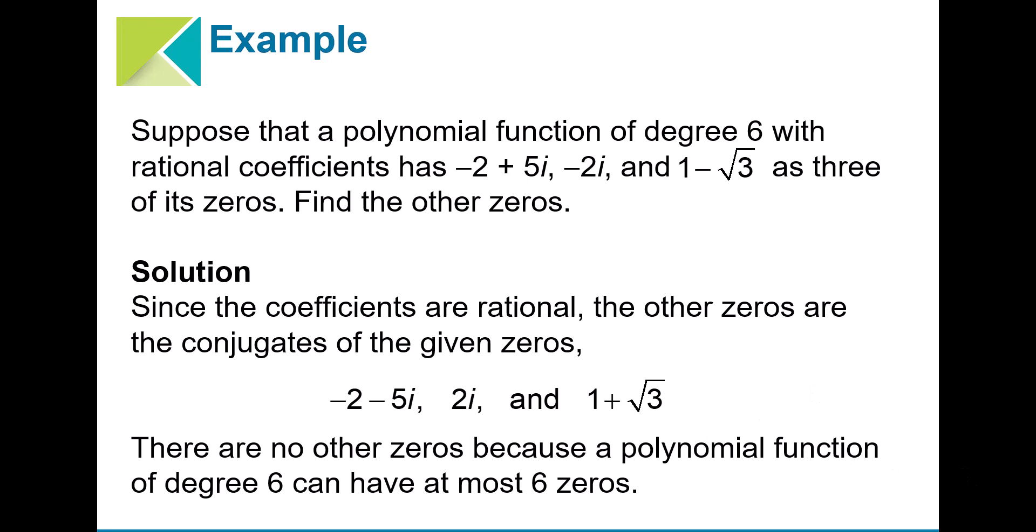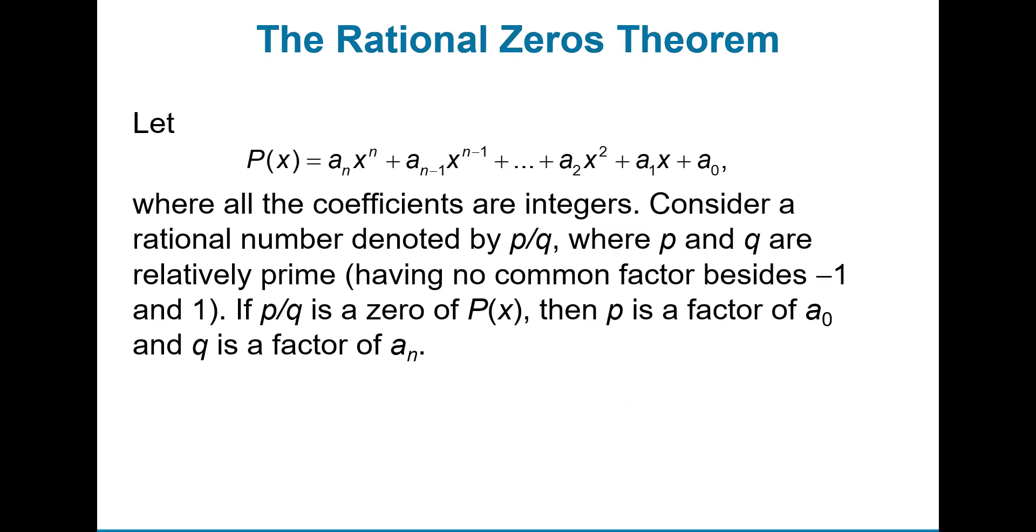Then you'll see the rational zeros theorem, where all the coefficients are integers. We can consider a rational number denoted by p/q, where p and q are relatively prime, meaning they have no common factors besides negative 1 and 1. If p/q is a zero of P(x), then p is a factor of a sub 0 and q is a factor of a sub n.